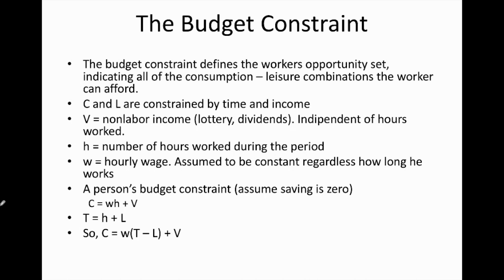The next stage is to incorporate the concept of budget constraint into the analysis, because given the workers' preference, that preference is still subject to the amount of budget available to the worker in deciding his or her opportunity set. Therefore, the budget constraint can be defined as the workers' opportunity set, indicating all of the consumption-leisure combinations available to the worker to enjoy.